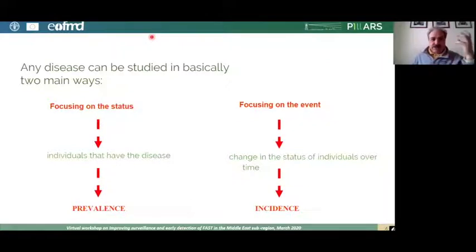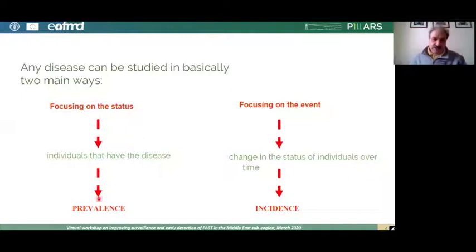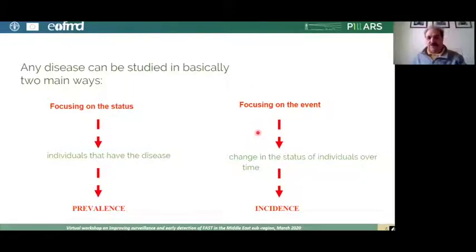The most important concept in the extended presentation is that any disease can be studied using two main approaches. One focuses on the status — on individuals that have the disease at a certain point in time — and the measure of occurrence used is prevalence. The other focuses on the event, studying how individuals move from a healthy status to a disease status over time, and the measure used is incidence.